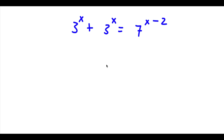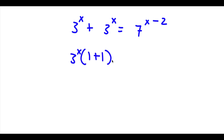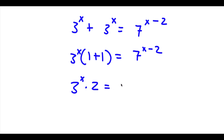All right, so for the next problem I have 3 to the power of x plus 3 to the power of x is equal to 7 to the power of x minus 2. The first thing I'm going to do is factor out 3 to the power of x from the left-hand side. So I have 3 to the power of x times 1 plus 1, which equals 7 to the power of x minus 2. Now 1 plus 1 is 2, so I have 3 to the power of x times 2 equals 7 to the power of x minus 2.